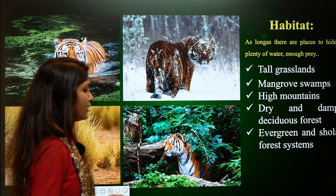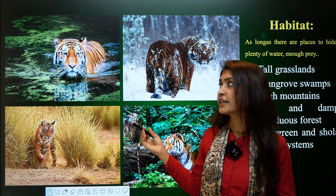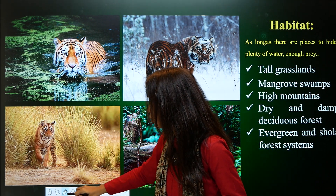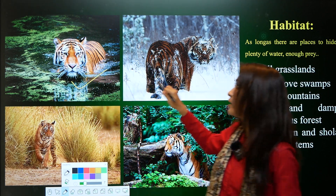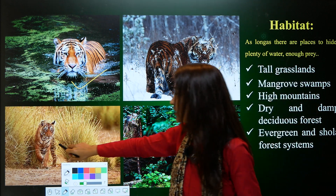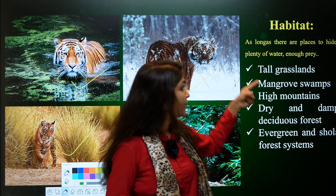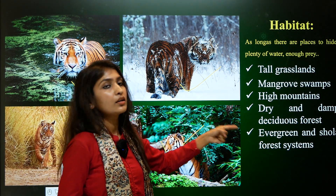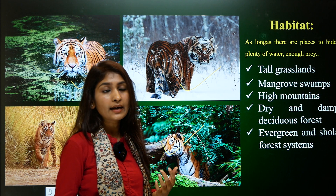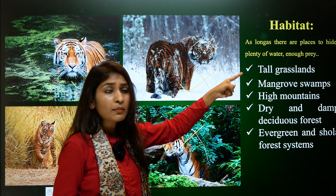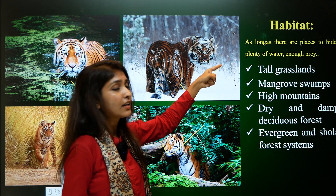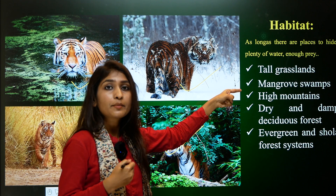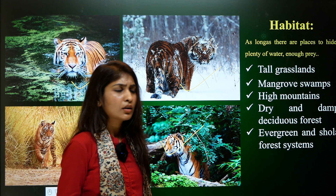Tigers live in a variety of habitats — mangrove swamps, mountainous regions, grasslands, and forest. The commonality for a tiger to make life in a particular habitat is that there must be a place to hide, availability of water — important because of their semi-aquatic lifestyle — and enough prey to live.